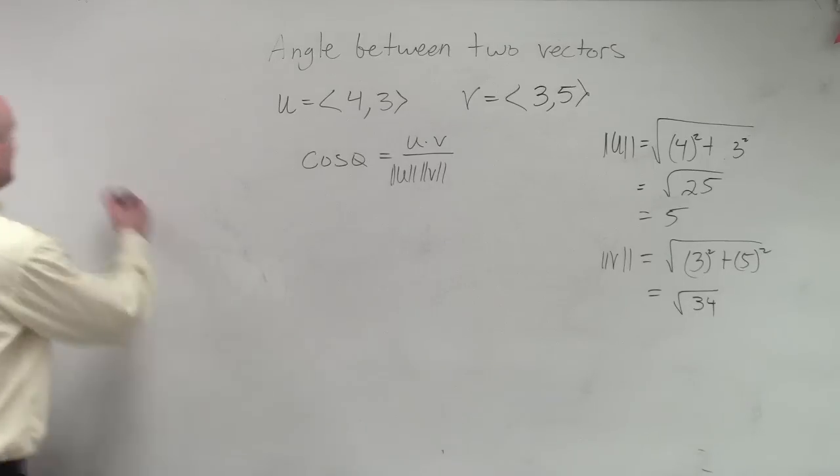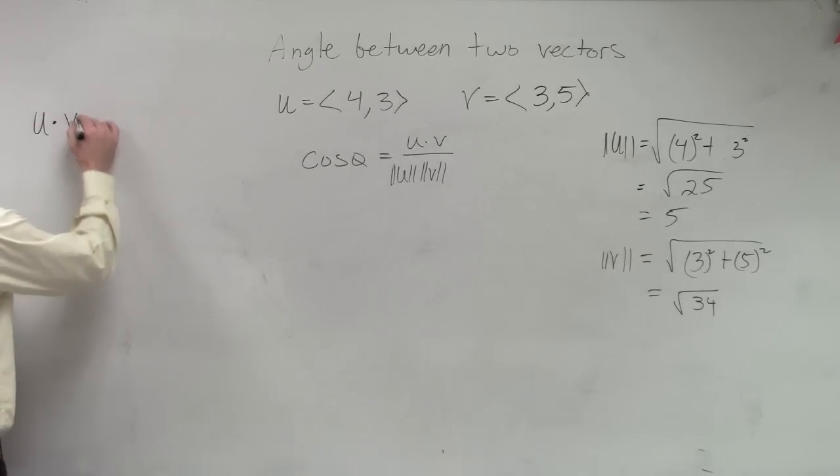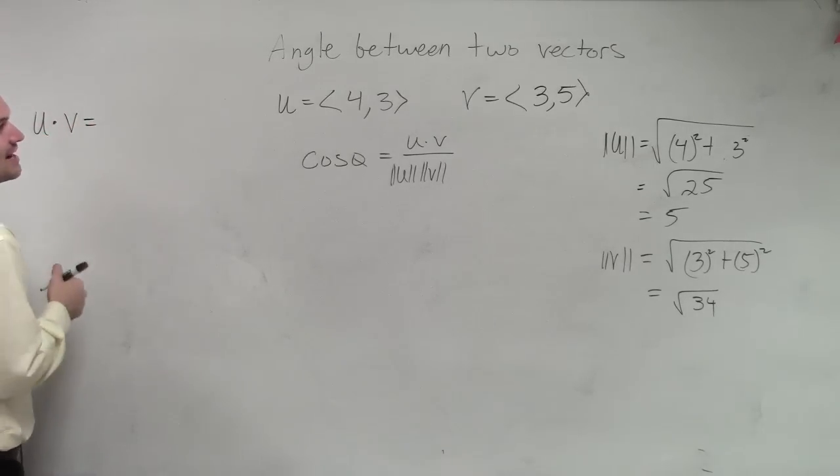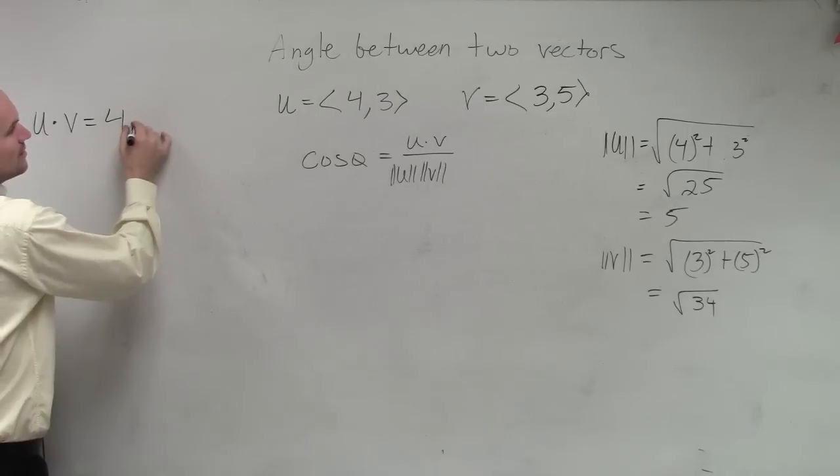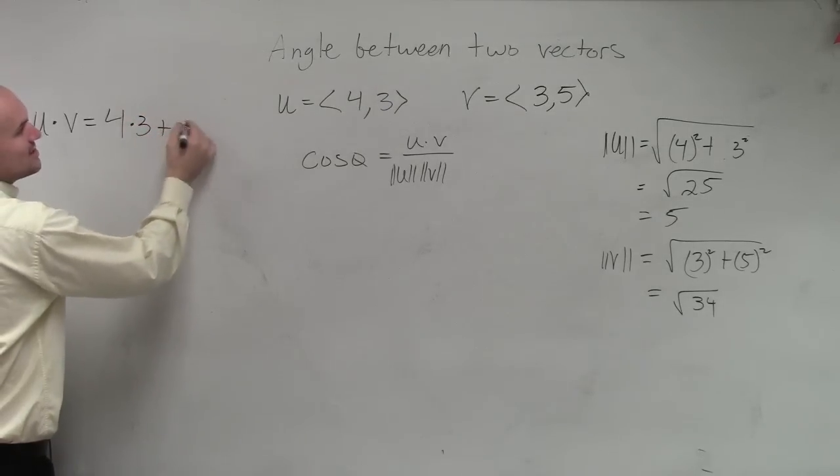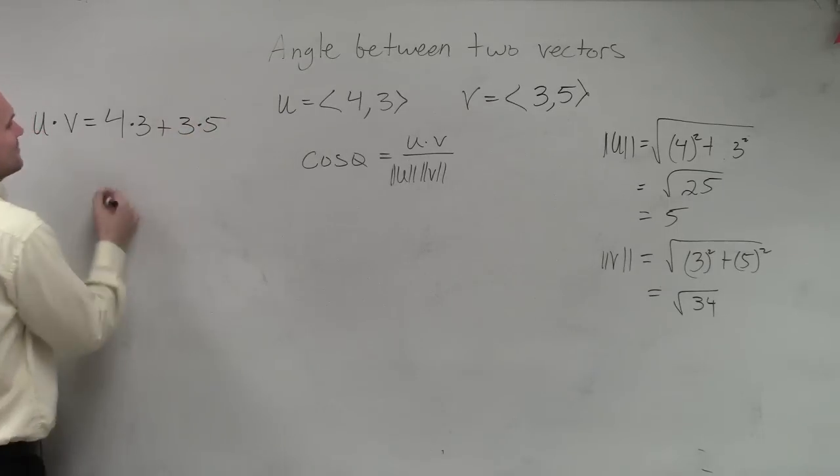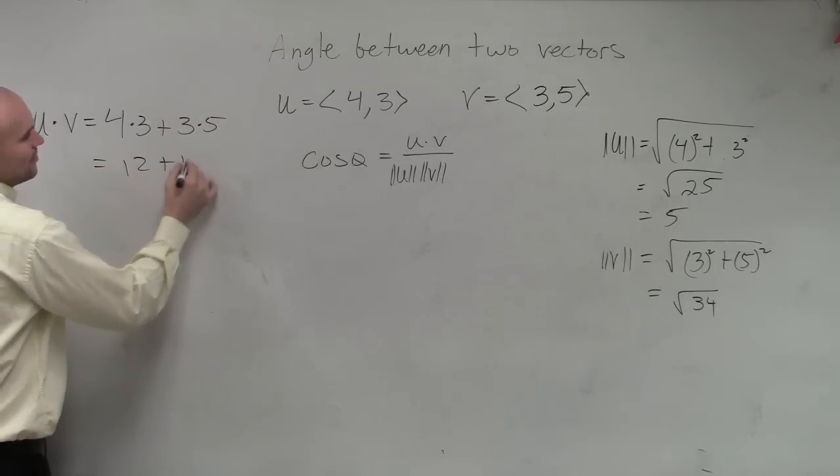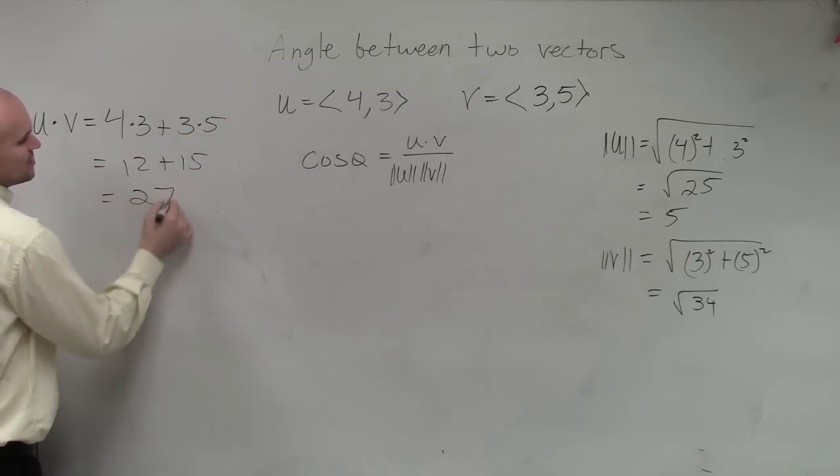Then let's do the dot product of u times v. Dot product of u times v is going to be 4 times 3 plus 3 times 5, which equals 12 plus 15, which equals 27.